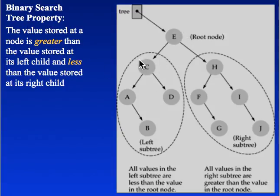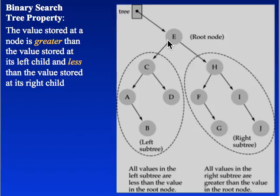All of the nodes in the left subtree are smaller or less than the root. As you see here, we have E in the root and all of the nodes in the left subtree are less than E or precede E. And all the letters in the right subtree follow E. We have H, and F is less than or comes before H. So that is correct.